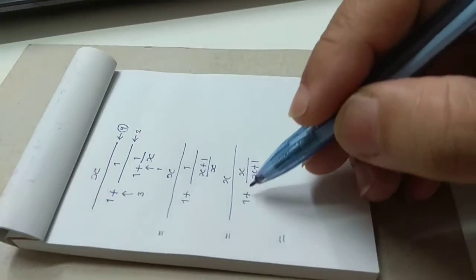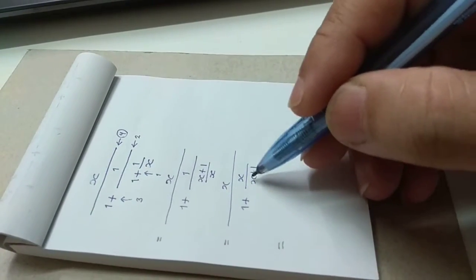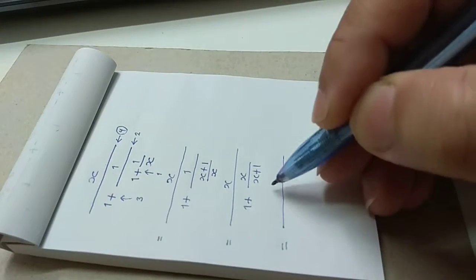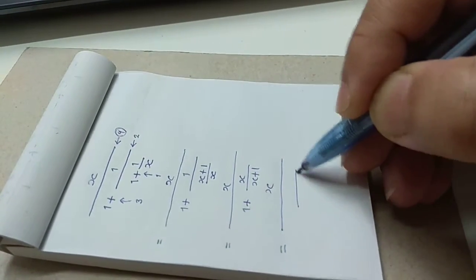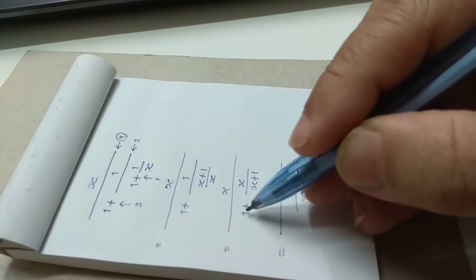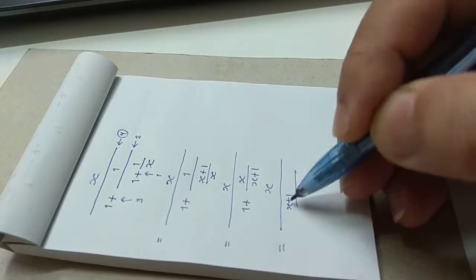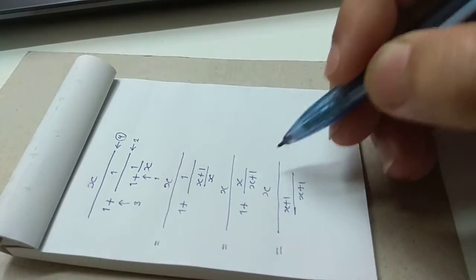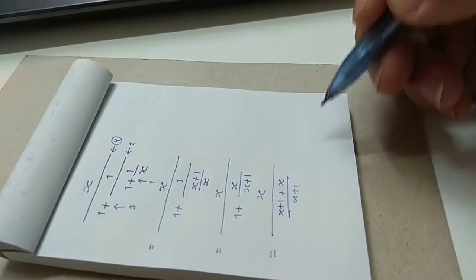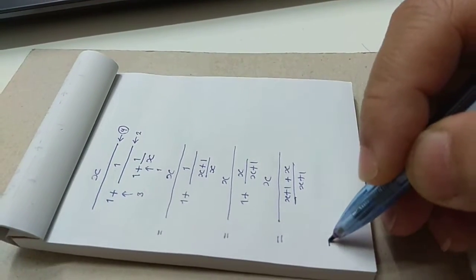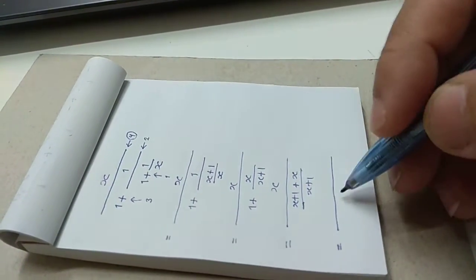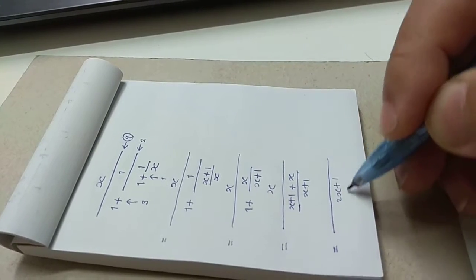Next, you add this fraction and 1. So, common denominator x plus 1. 1 becomes x plus 1 divided by x plus 1. x over x plus 1 is x over x plus 1. So, x plus 1 plus x is 2x plus 1.